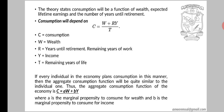The theory states that consumption will be a function of wealth, expected lifetime earnings, and the number of years until retirement. This is expressed by the equation: C = (W + rY) / T, where C is consumption, W is wealth, r is years until retirement, Y is income, and T is remaining years of life.